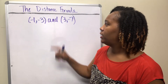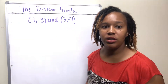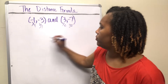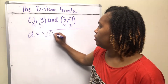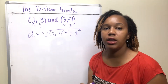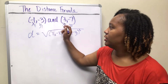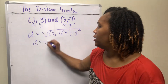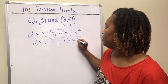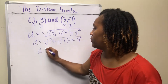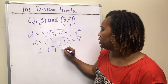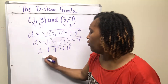Now you try: find the distance between (−1, −3) and (3, −7). Pause the video and give it a try. Label your (x1, y1) and (x2, y2), then plug into d = √[(x2 − x1)² + (y2 − y1)²]. Substituting: (3 − (−1))² + (−7 − (−3))² = (3 + 1)² + (−7 + 3)² = 4² + (−4)².